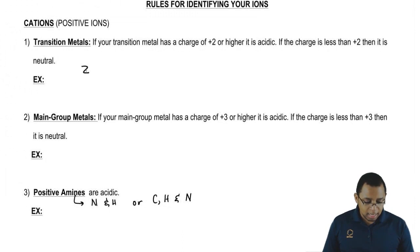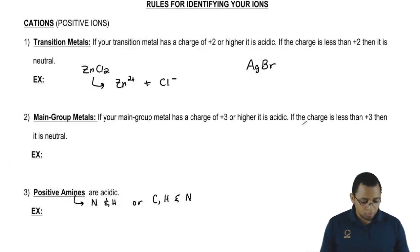Let's say we have zinc chloride and then we have silver bromide. Now remember, zinc is always plus 2. So when this thing breaks up into its ions, these are the ions we're going to create. Now zinc is a transition metal, it meets the requirement. It meets the minimum of a plus 2 charge. And because it meets the minimum of a plus 2 charge, it's going to be acidic.